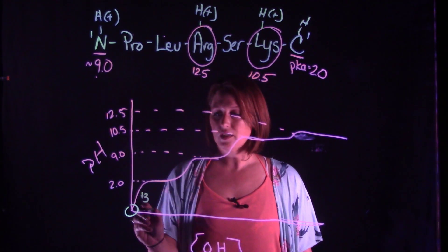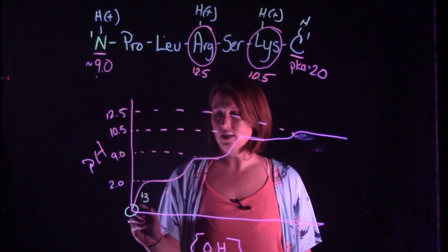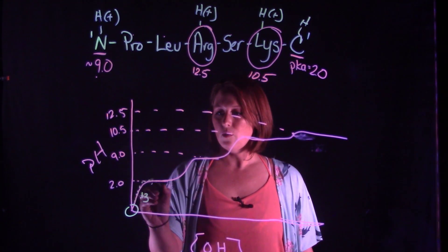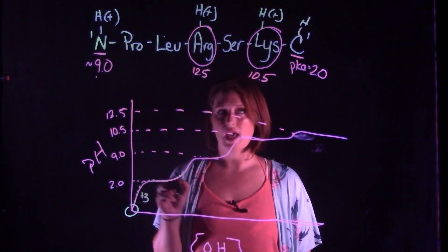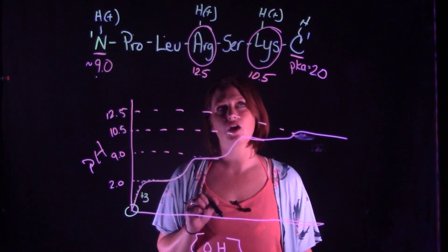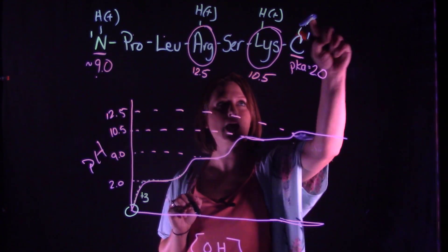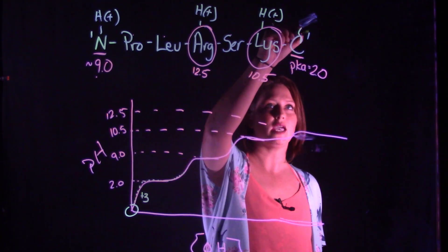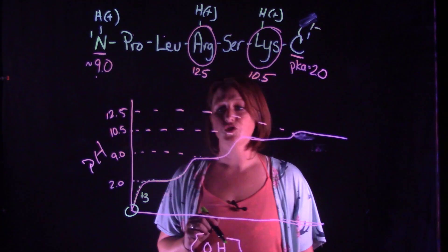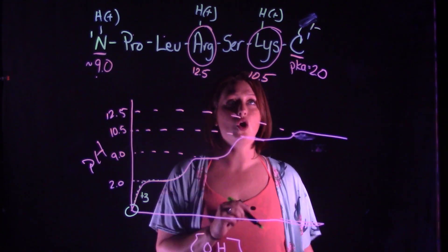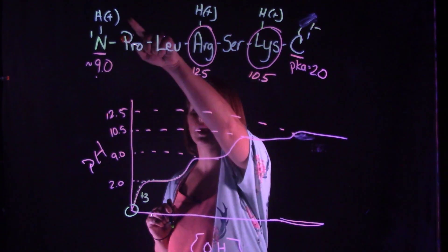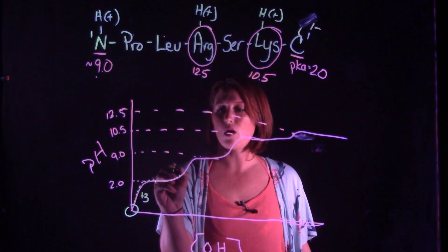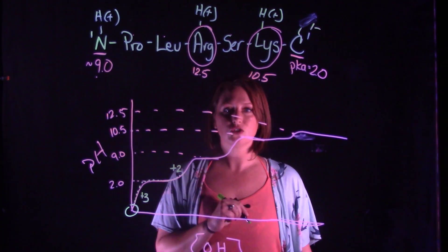As we start to titrate adding hydroxide, what happens when we get above the first pKa, that pKa of the carboxylic acid, is we will lose that hydrogen and we will gain a one minus charge, giving us an overall plus two charge.